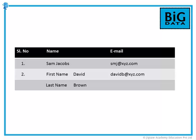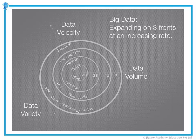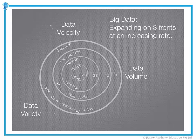Big data primarily consists of the following three elements: Volume, Velocity, and Variety. Let's now take a more detailed look at each of these elements.